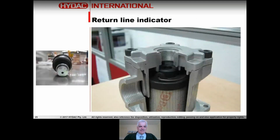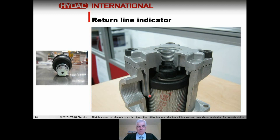This is a typical tank top mounted return line filter, shown cut away. You can see the thread at the top where the indicator sits. You can see on the outside of the element where the flow goes in and approaches the element - you simply measure the pressure there. That's a typical indicator and where it's fitted.